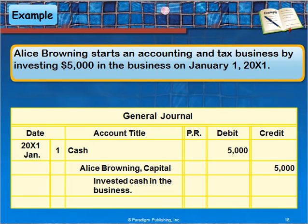So when we record this, you see we put the date, we put cash and we debit. Keep in mind, the debit is always listed first. And you notice that we have indented the credit and listed it on the second line, and then we have a brief description.